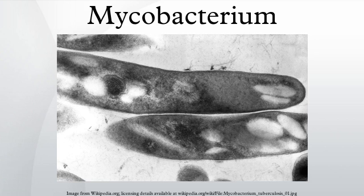Pathogenicity: mycobacteria can colonize their hosts without the hosts showing any adverse signs. For example, billions of people around the world have asymptomatic infections of M. tuberculosis. Mycobacterial infections are notoriously difficult to treat. The organisms are hardy due to their cell wall, which is neither truly gram-negative nor gram-positive. In addition, they are naturally resistant to a number of antibiotics that disrupt cell wall biosynthesis, such as penicillin.